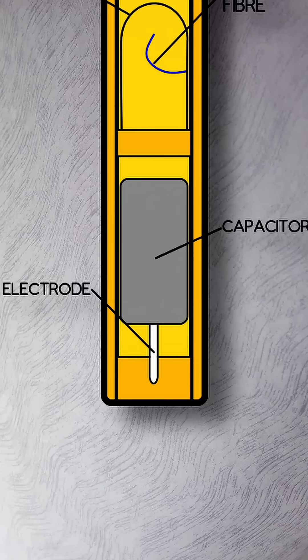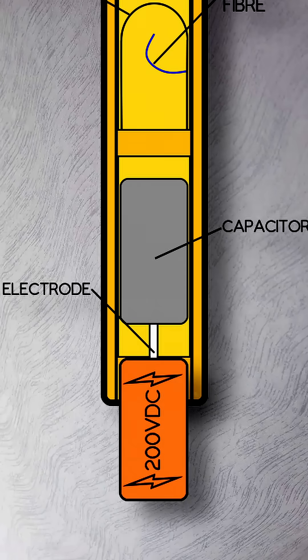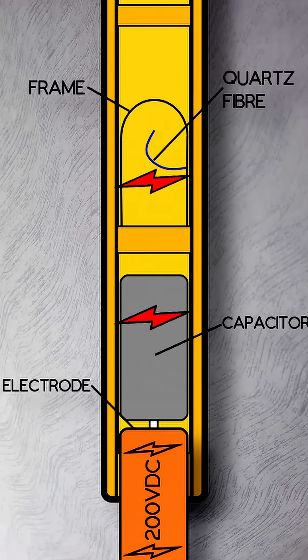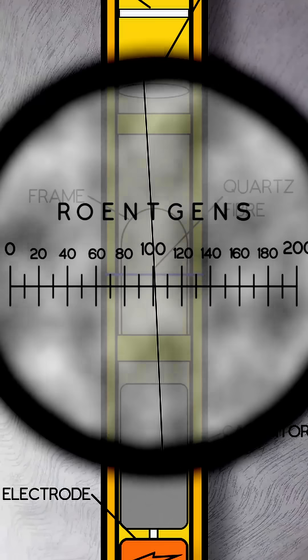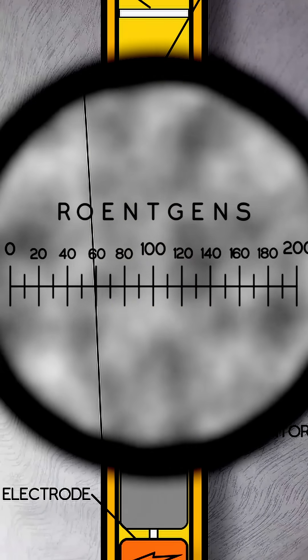When the capacitor is charged up with up to 200 volts DC, it sends an electrical charge to that quartz fiber. The fiber then gets a little excited. Controlling the level of charge lets you reset the meter back down to zero on the scale.